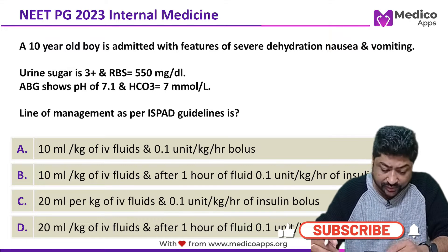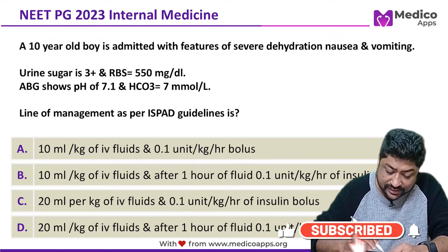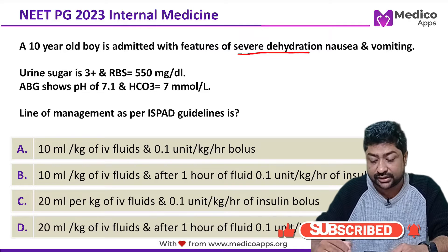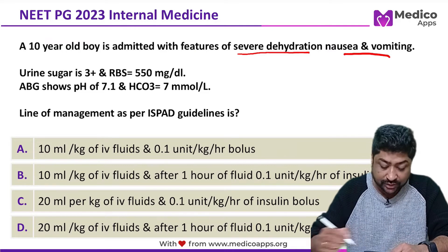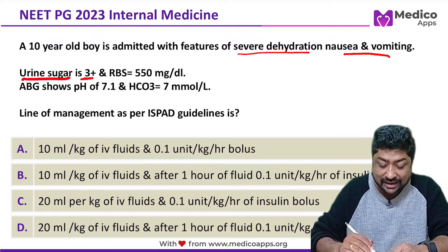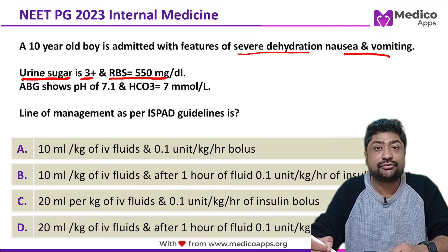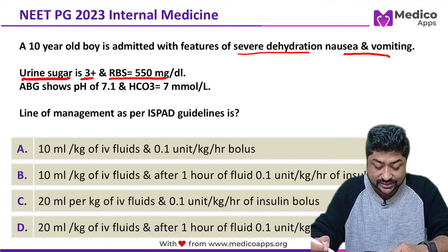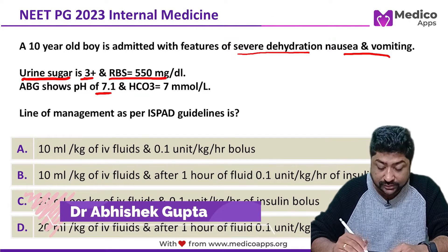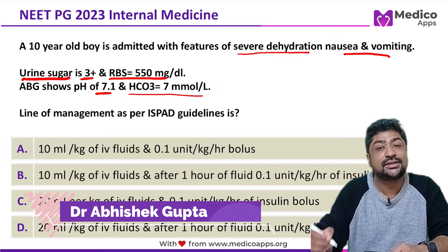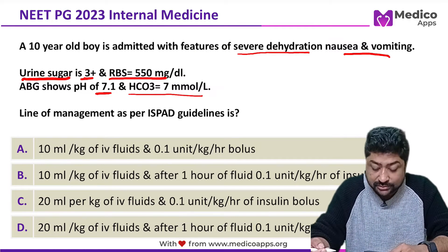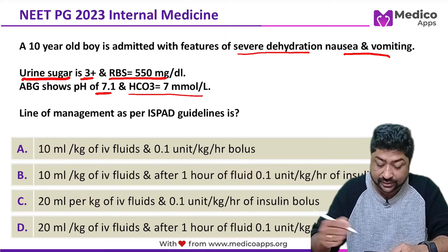This question appeared in NEET PG 2023. It describes a 10-year-old boy admitted with features of severe dehydration, nausea and vomiting. Urine sugar was 3 plus and random blood sugar was 550 mg/dL. ABG showed pH 7.1 and bicarbonate level of 7 mmol/L. The question asks for the line of management as per ISPAD guideline.